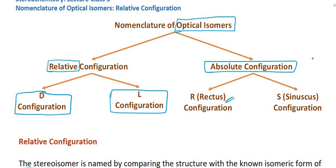The new system is the R and S system. R stands for rectus and S stands for sinister. This is the absolute configuration, and we will start with it shortly.